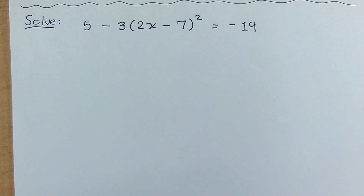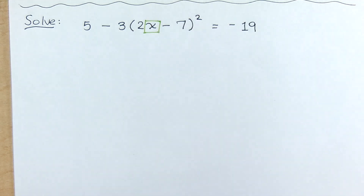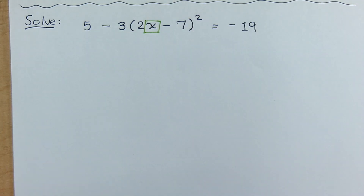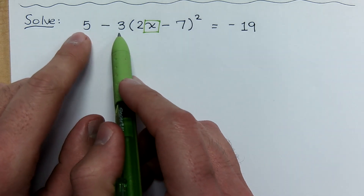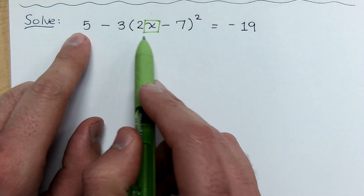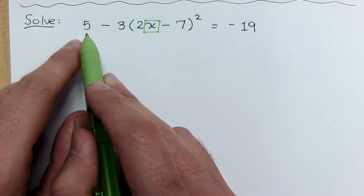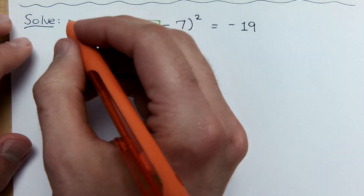If we look at this problem right here, one of the things you have to understand is just the recognition. This is the only place where you see your variable. So your job here is to peel away the layers until only X remains. When you peel away the layers, you start with the stuff that's furthest away from your variable, which in this case is the 5.